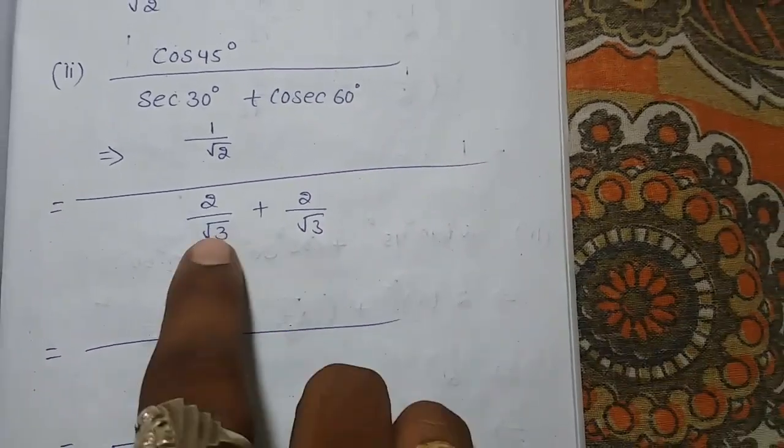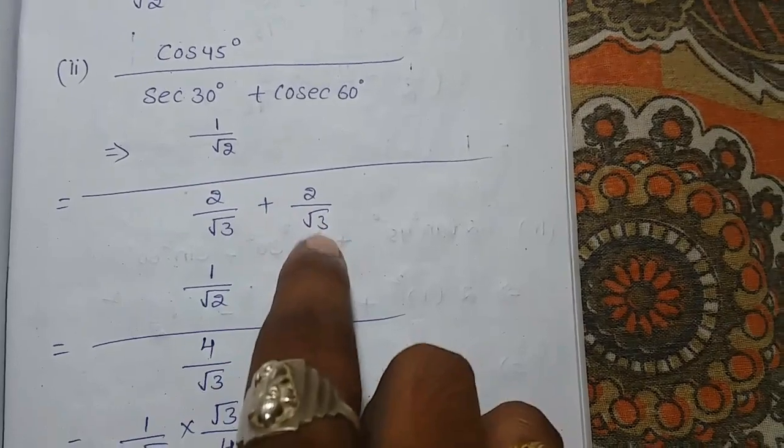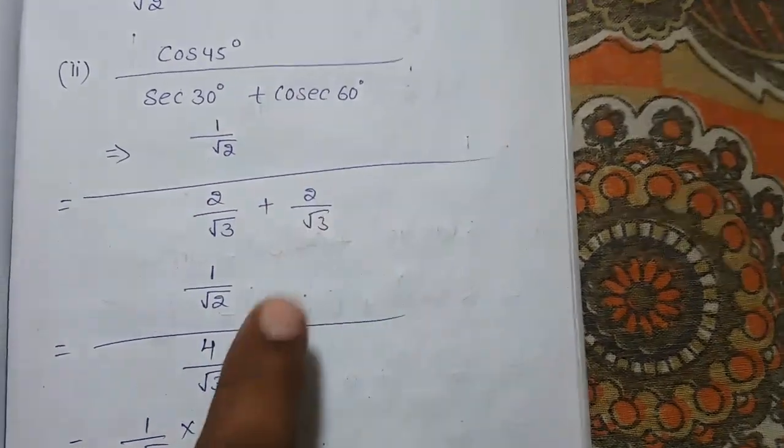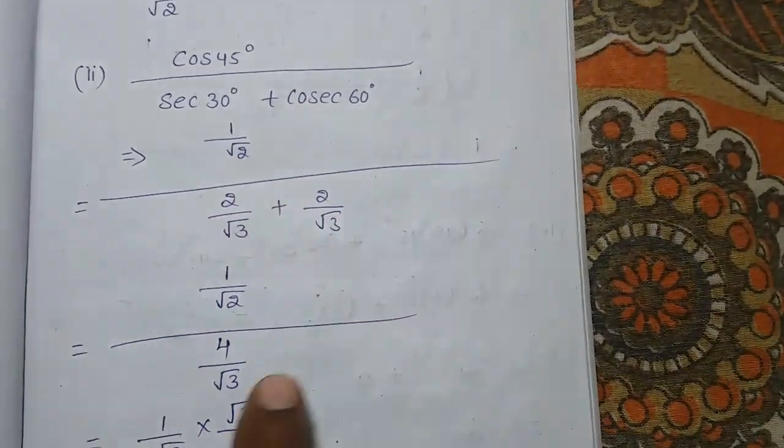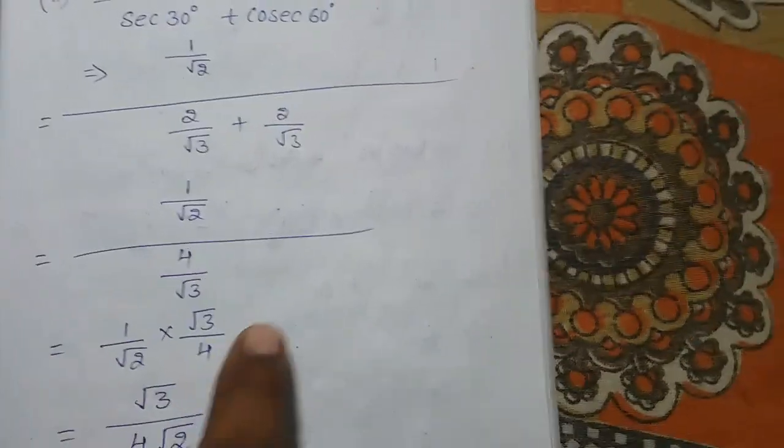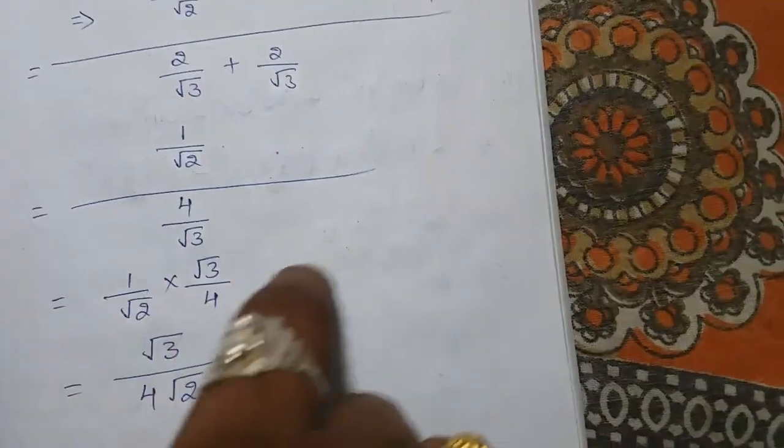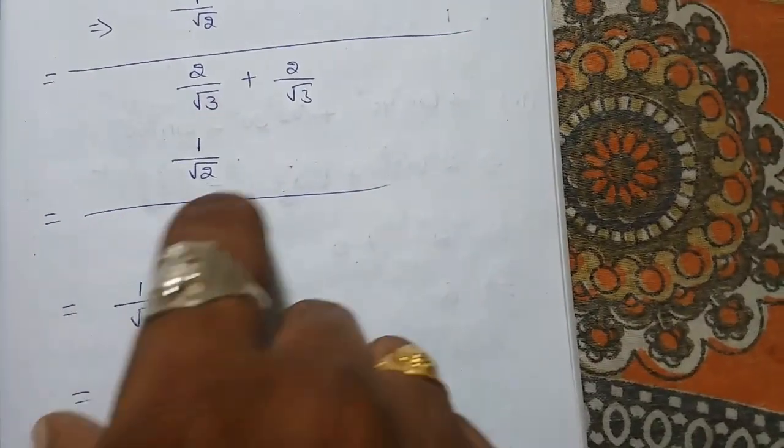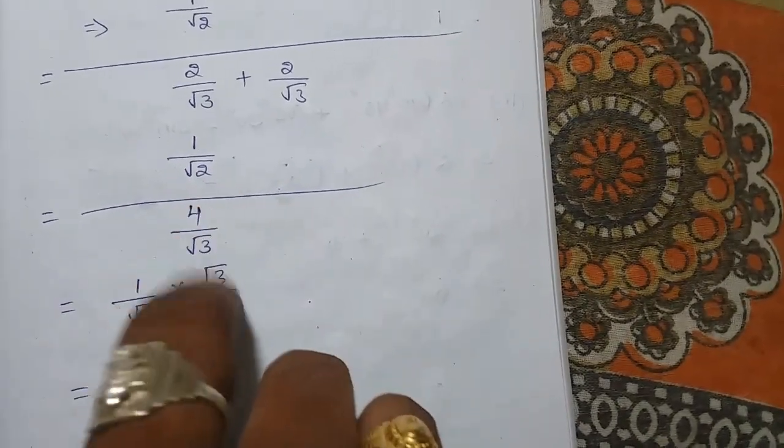1 by root 2. Here both having the same denominator, we can do the addition of numerators directly. 2 plus 2, it is 4 by root 3. It is looking like fraction by fraction, numerator also fraction is there, denominator also fraction is there.